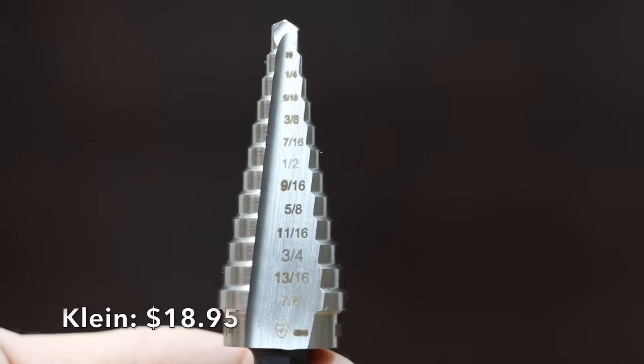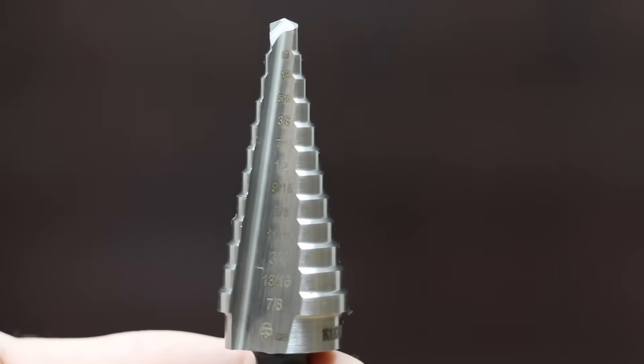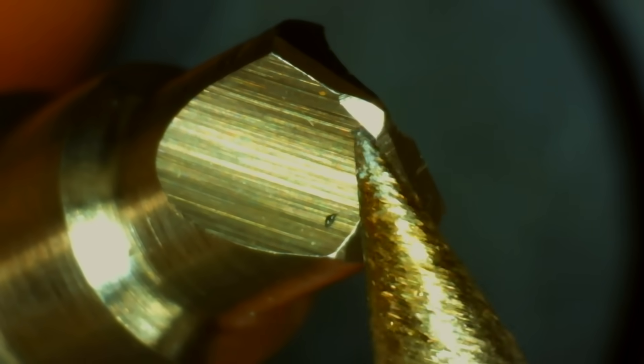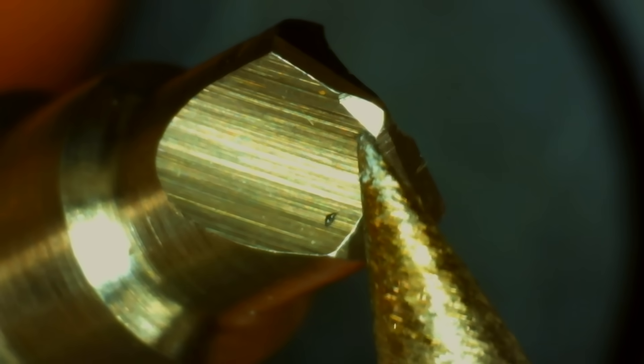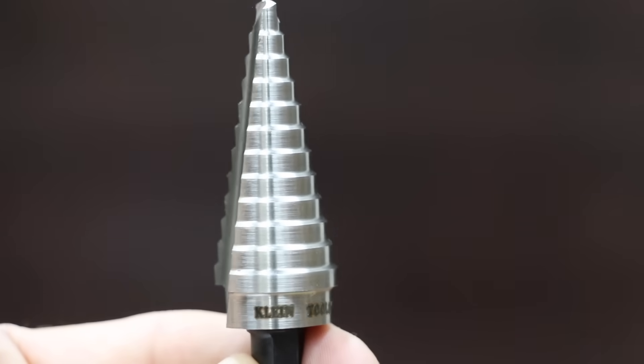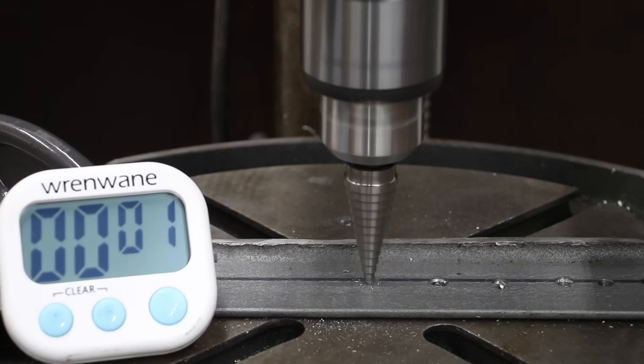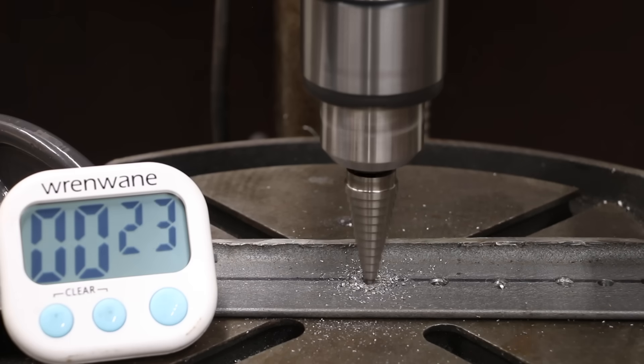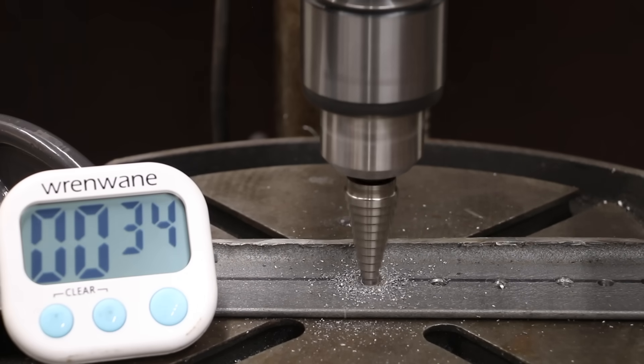At $18.95, the Klein Bit seems very reasonably priced for a Step Bit that's made in USA. Anti-skid tip eliminates the need for center punching or pilot hole drilling for most sizes. It uses a single flute design to allow for easier sharpening. At a slightly higher price than the Hercules, the Klein did a much better job than the Drill Master, Nikko and Bauer, punching through the mild steel in 34 seconds and is now in the lead.